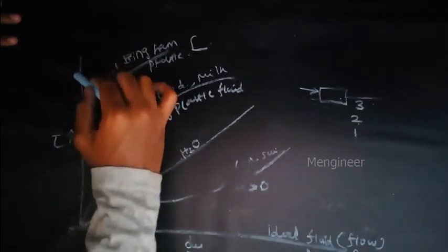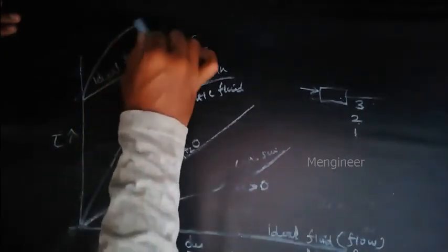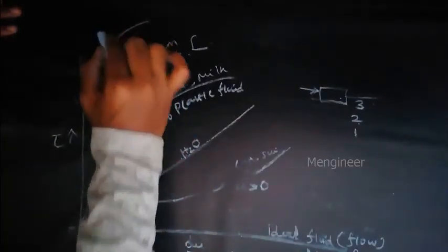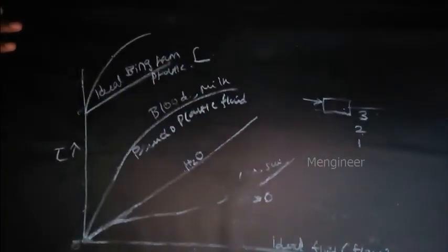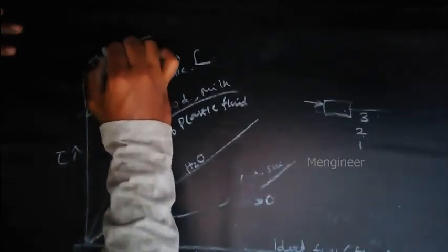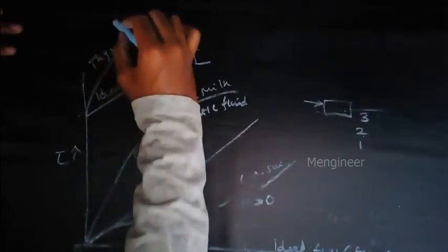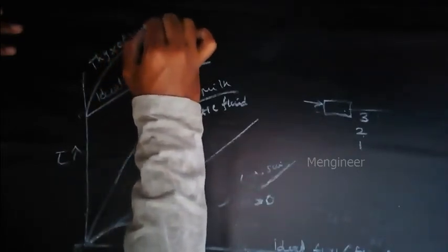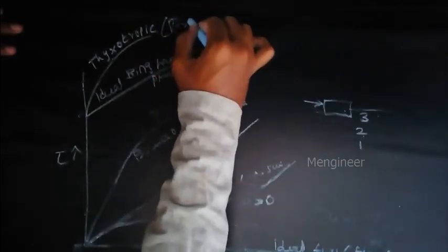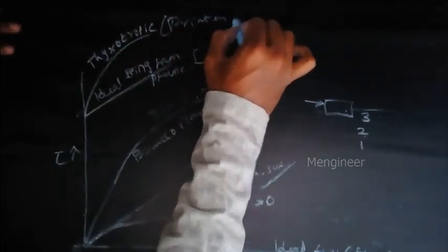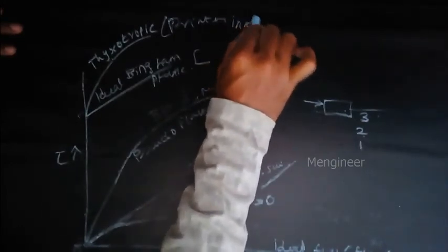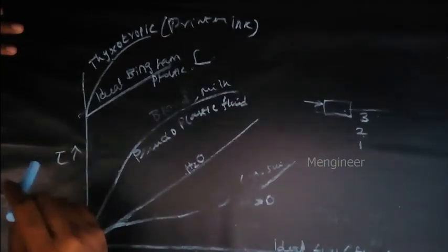Next is the thixotropic fluid. Let me write it. There is no space. I can write it here. Thixotropic. Example for this fluid is printer ink. That ink we are using inside the printer you know. So that is the example for this thixotropic. That's it. I have covered all this.